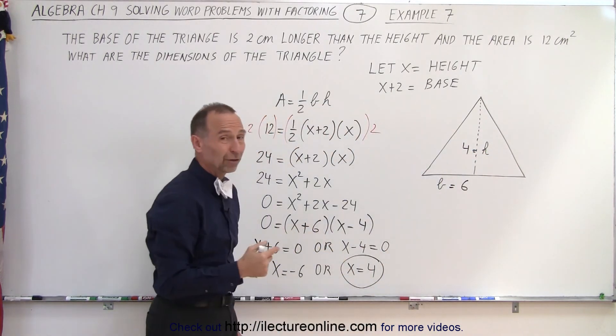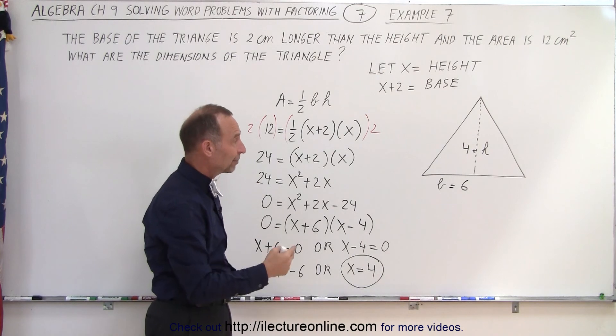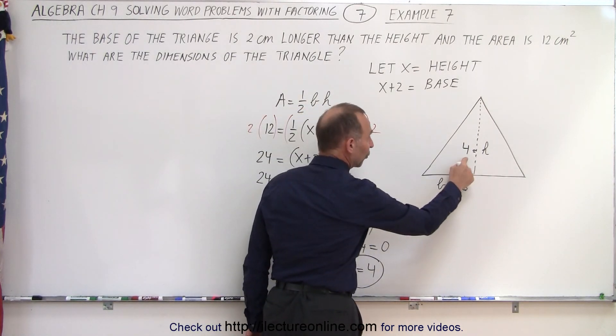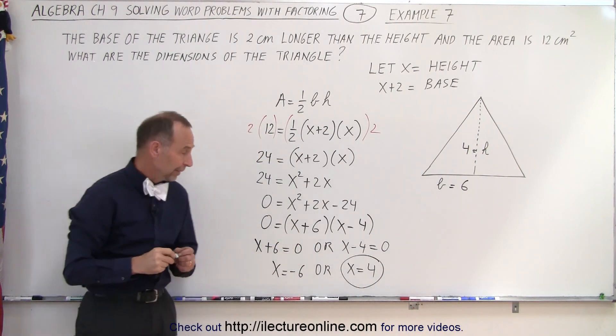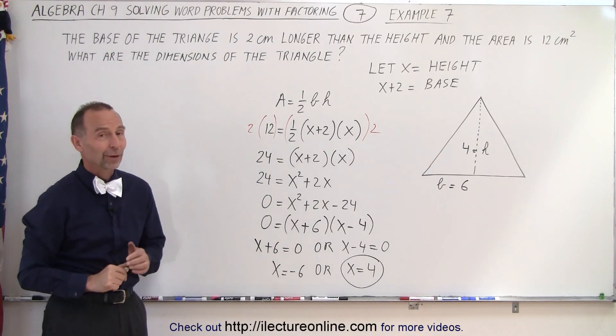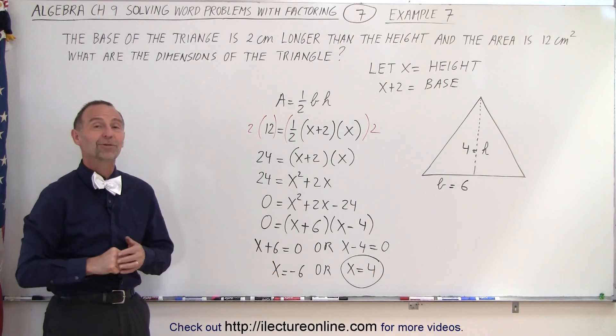If we give it a try, half the base times the height, half the base is 3 times 4 is 12, and that equals the area of the triangle. So it looks like we found the correct solutions. That's how it's done.